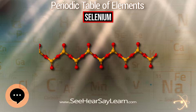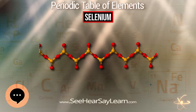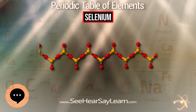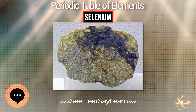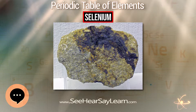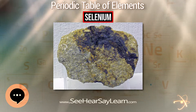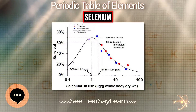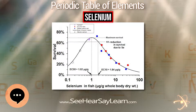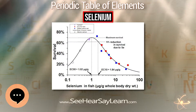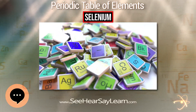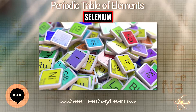Selenium salts are toxic in large amounts but trace amounts are necessary for cellular function in many organisms, including all animals. Selenium is an ingredient in many multivitamins and other dietary supplements, including infant formula. It is a component of the antioxidant enzymes glutathione peroxidase and thioredoxin reductase, and is also found in 3 iodine enzymes which convert one thyroid hormone to another.